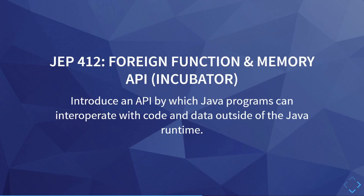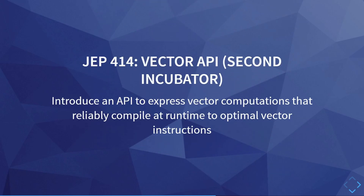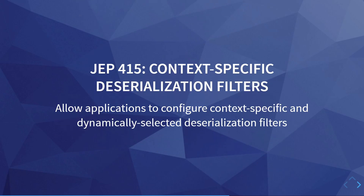Then there is JEP 412, which introduces an API by which Java programs can interoperate with code and data outside of the Java runtime. This was already possible with JNI, but this new API should be easier, safer, and more performant. In JEP 414, the Vector API returns in a second incubator — the API allows vector computations, and these should be easier, more reliable, and more performant than the previous incubation. Last in this category is JEP 415, which allows us to add context-specific deserialization filters. Deserialization is a risky business, and this can provide another layer of security when deserializing untrusted data.